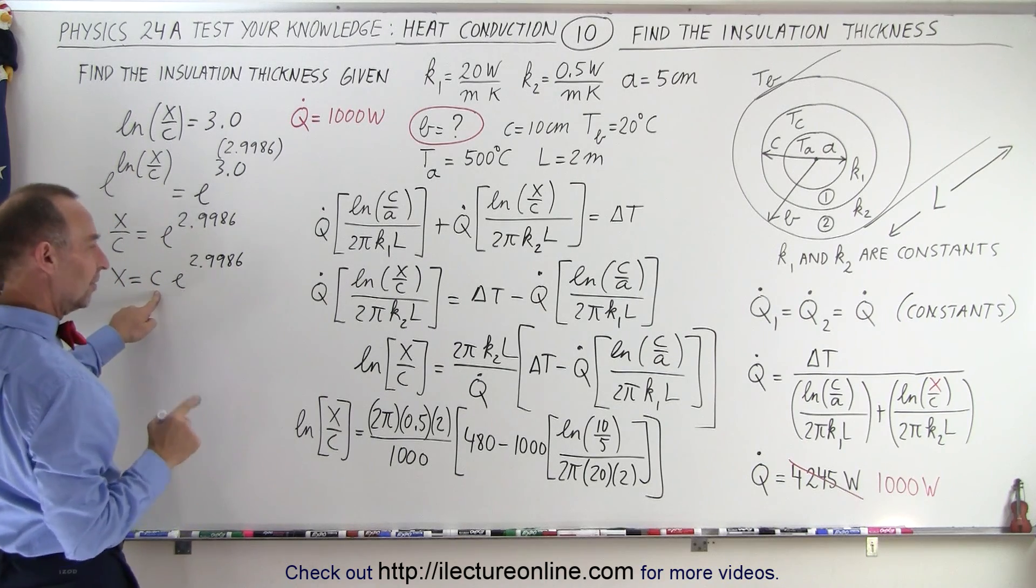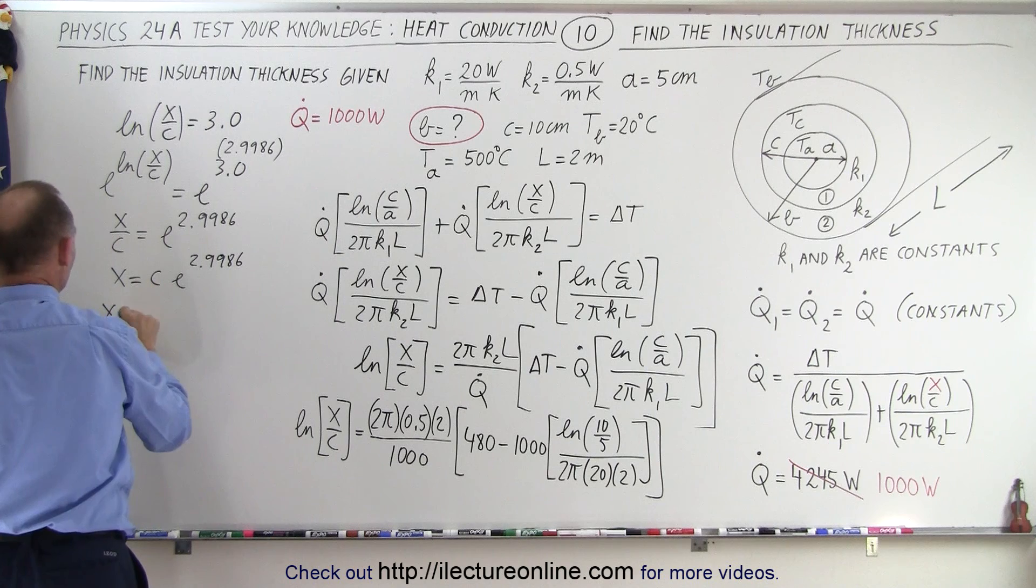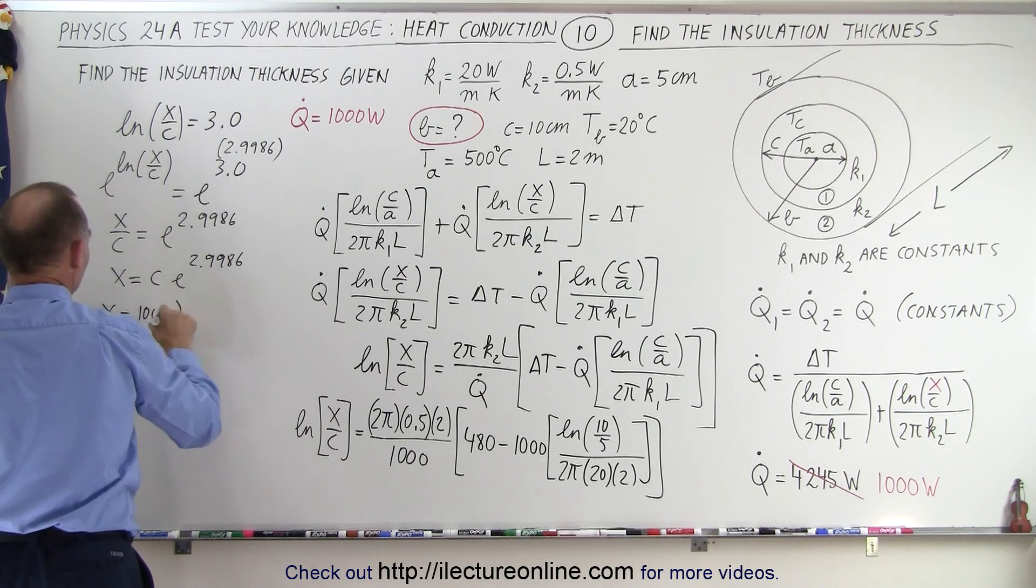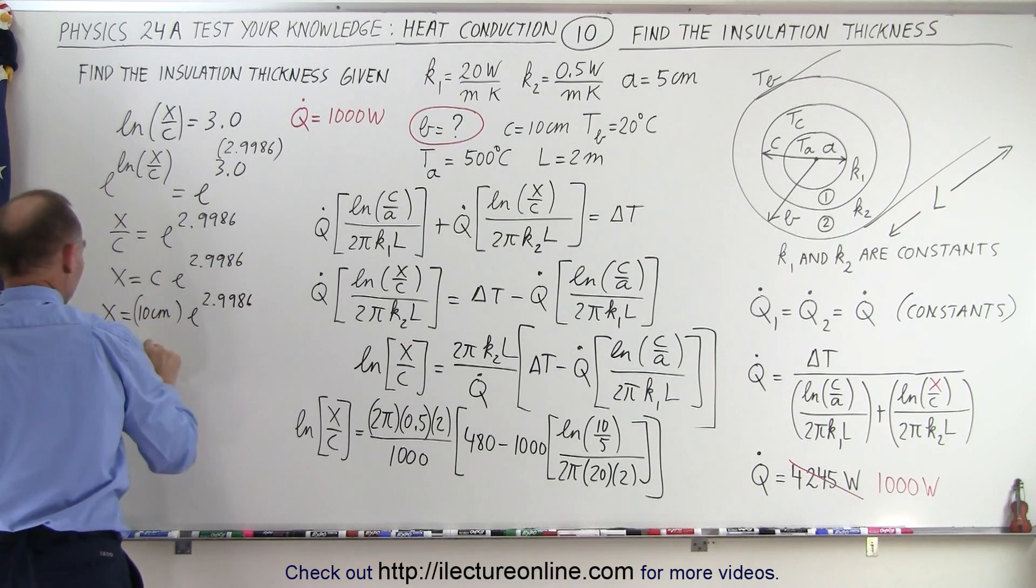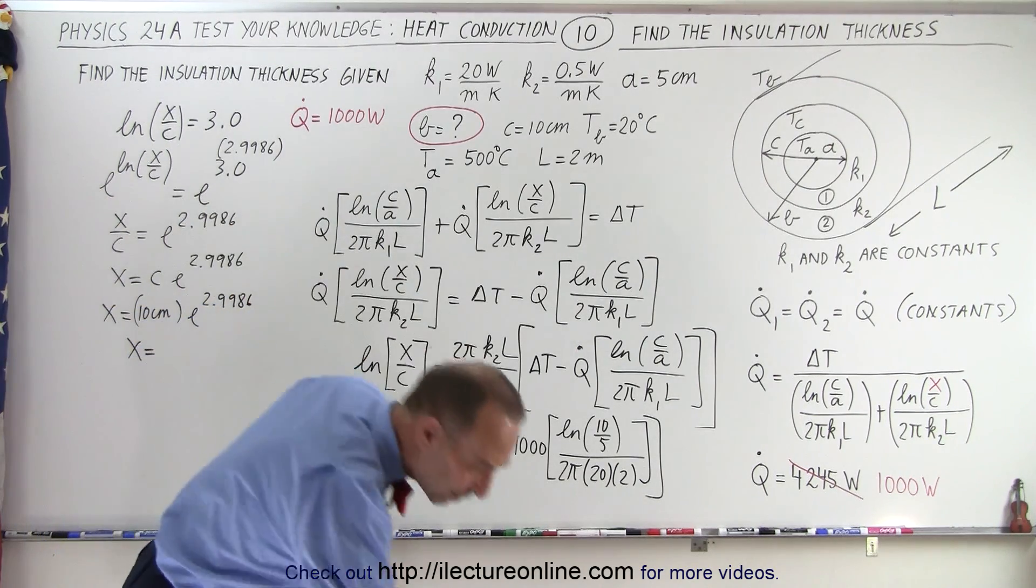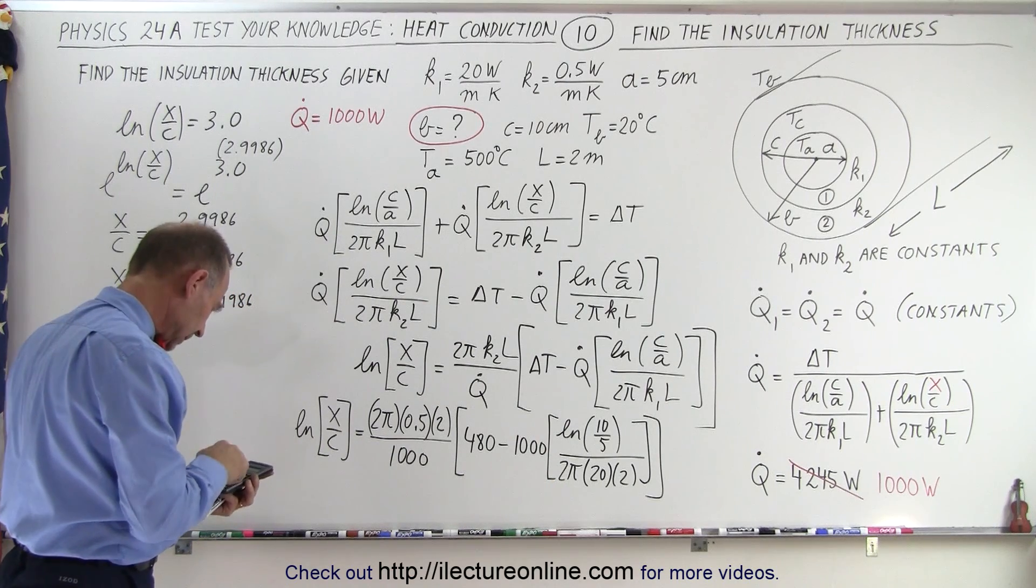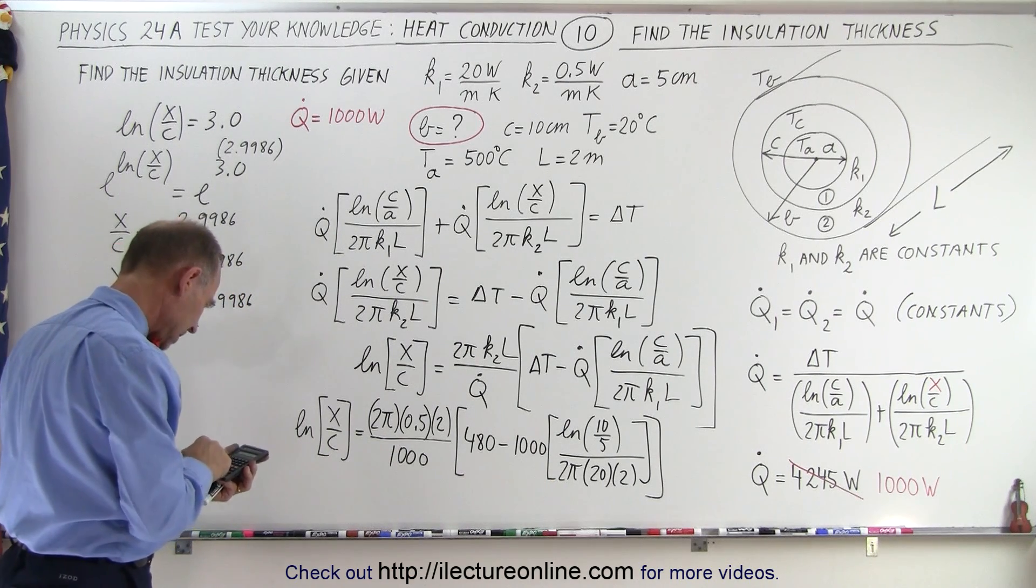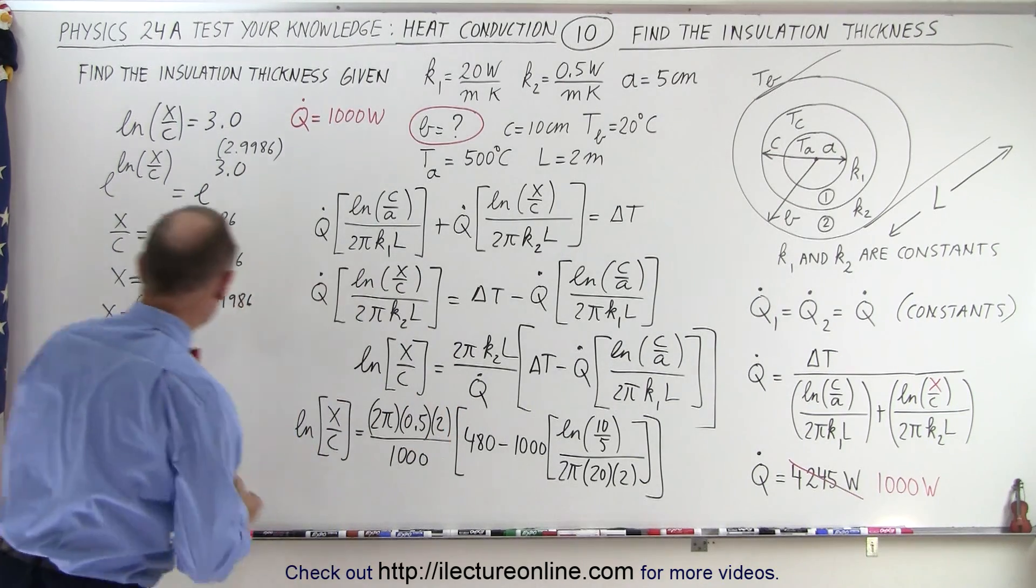And c is 10 centimeters. So x is equal to 10 centimeters times the quantity e to the 2.9986. So x is equal to times 10 equals, looks like, close enough, 200 centimeters.